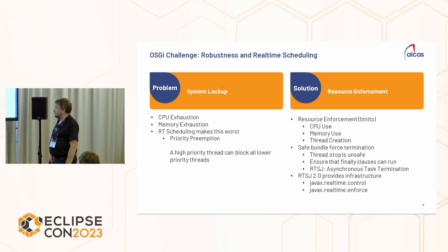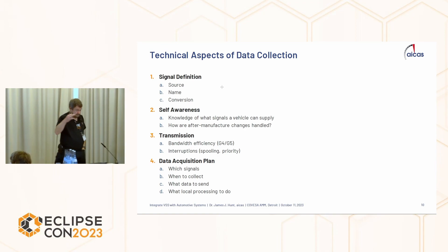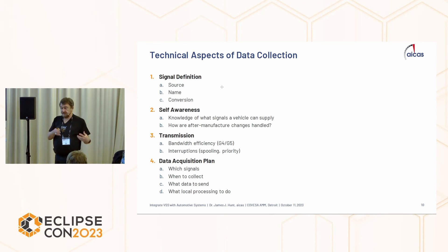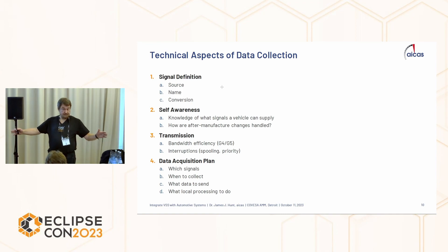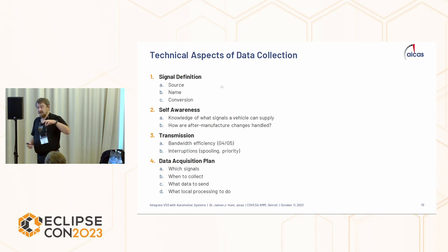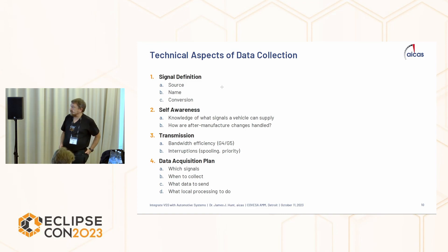Now getting into the aspects of data collection — there are different levels. You need to know what signals you want and how to define them. The system should have some self-awareness so that a management system knows what vehicles it's talking to and what capabilities those vehicles have. Thinking of vehicles in the field over 10 or 20 years, newer vehicles will be different and able to do different things than older ones. But you still want a uniform platform that you can update in the field. As the data collection application evolves, we can change it even for vehicles that have already been deployed.